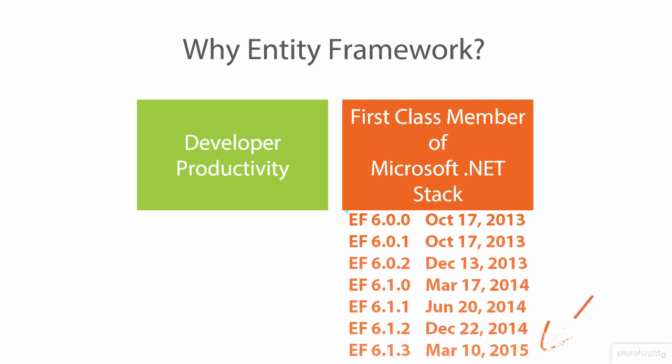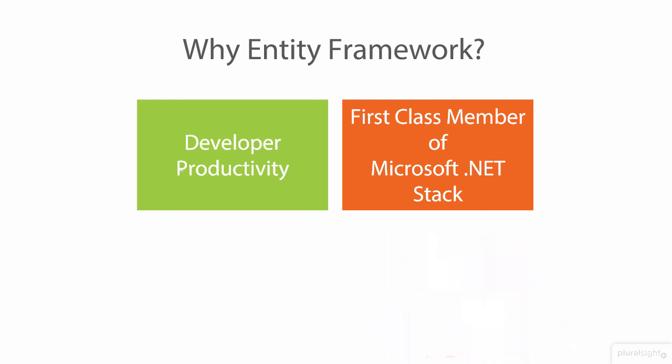The most recent version, 6.1.3, released in March 2015, had over half a million downloads in the first three months. In total, the Entity Framework APIs have been downloaded over 11 million times. That represents not only a huge number of users, but a huge variety of scenarios that Entity Framework is supporting. Microsoft is quite serious about EF. EF6 will be around for a long time to come and will continue to evolve in parallel with the next iteration of EF beginning with EF7.